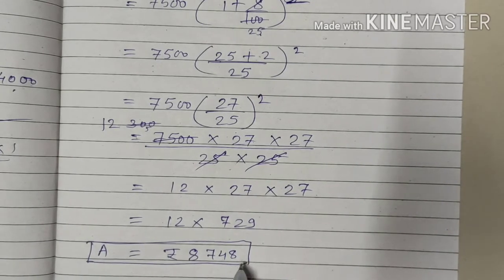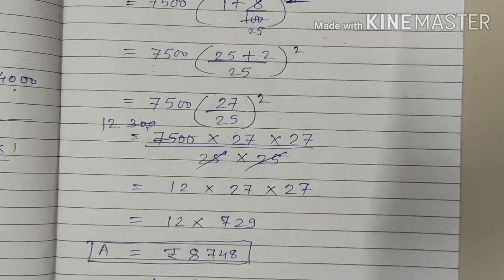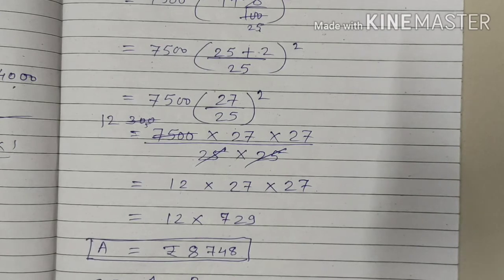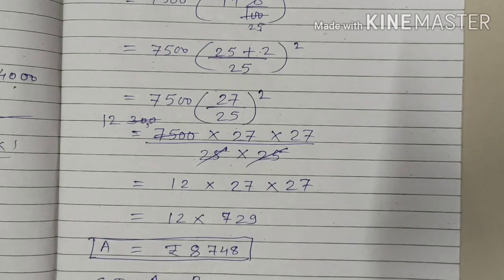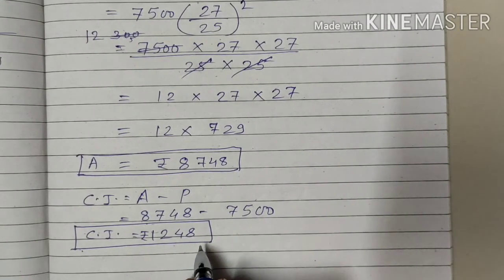Now we want to calculate the compound interest. That is A minus P: 8,748 minus the principal of 7,500. After subtraction, the compound interest will be Rs. 1,248.